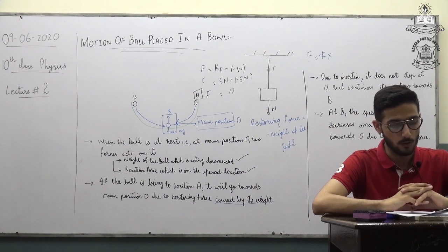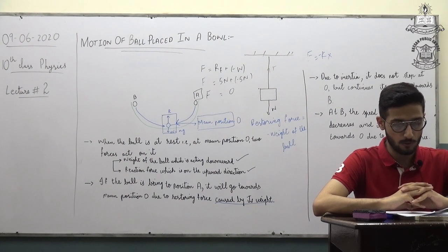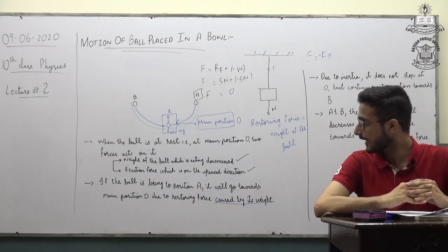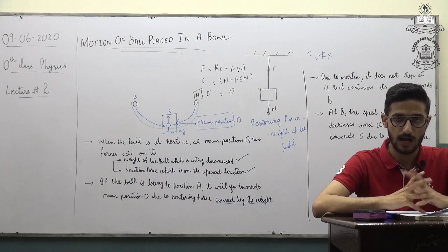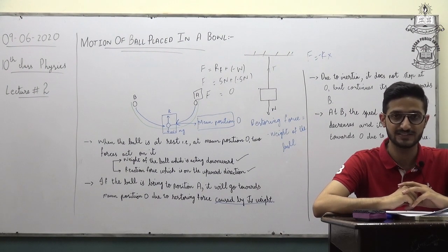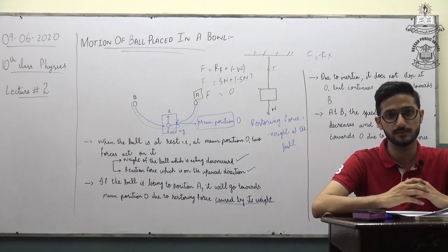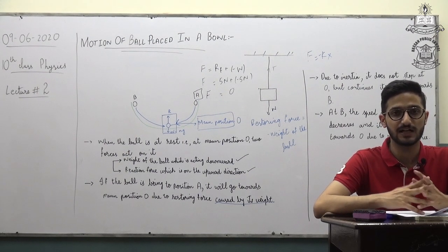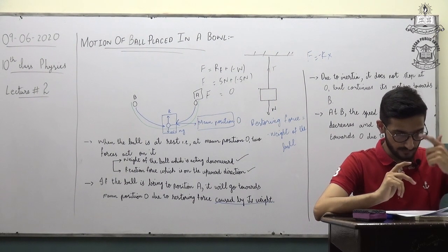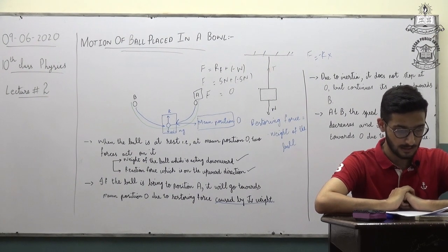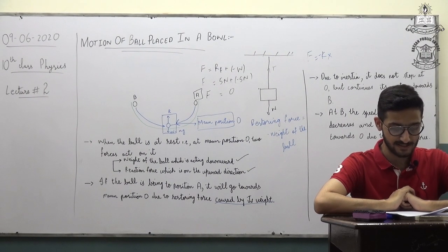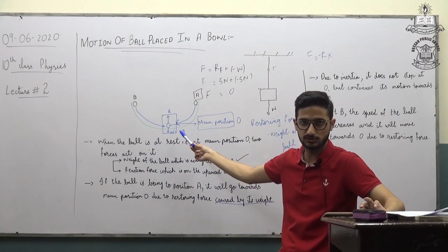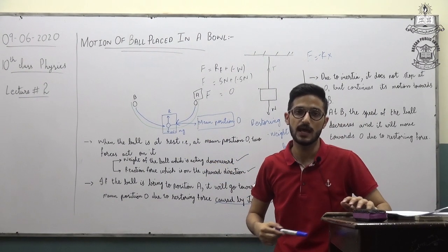After the definition, the next heading is 'Motion of Ball in a Bowl.' The motion of a ball placed in a bowl is another example of Simple Harmonic Motion. Draw the diagram here — as mentioned in the book, draw it exactly the same way. As I told you in 9th class, for any derivation or question in physics, never draw the diagram at the beginning or the end — always draw it in the middle.